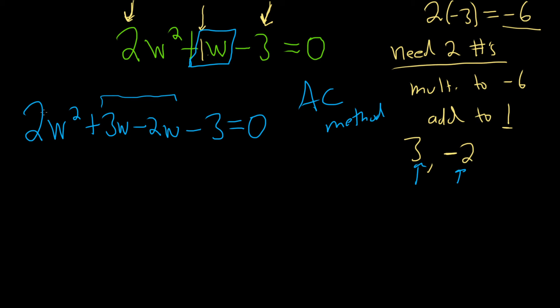So now we can use factor by grouping. We look at the first two terms. Looks like we can pull out a W. So we have W parentheses 2W plus 3. So pick two terms, the first two, and pull out the greatest common factor. In this case, it's W. And then over here, we can pull out a negative 1. That leaves us also with, again, 2W plus 3. Yeah, it looks okay. Negative 1 times 2W is negative 2W. Negative 1 times 3 is negative 3. And this is equal to 0.